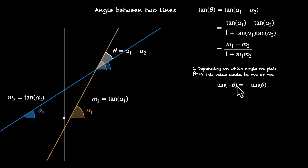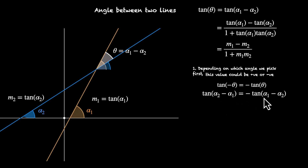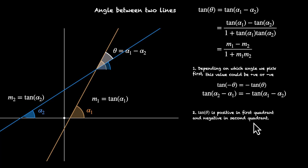Trigonometry helps us figure this out. Tan of minus theta equals minus tan theta. If you put theta as alpha one minus alpha two, we can see that if you subtract alpha two minus alpha one instead, you'll get minus of tan(alpha one minus alpha two). So you can get two answers, one positive and the other negative. Tan theta could be positive or negative — the angle could be in the first quadrant or the second quadrant. Tan theta is positive in the first and third quadrant and negative in the second and fourth.